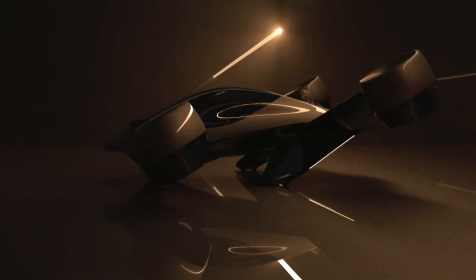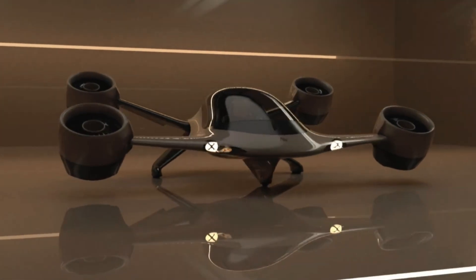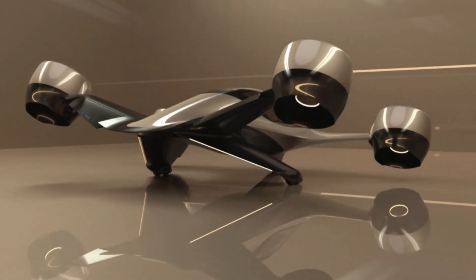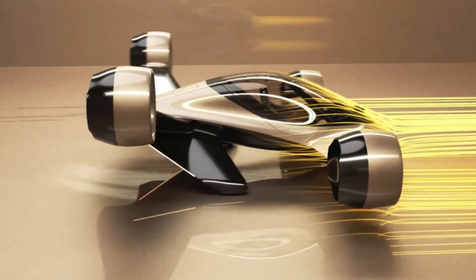At only 4.8 meters wide, Sigma can land anywhere—driveways, rooftops, yachts—with triple-redundant safety systems, including a ballistic parachute.